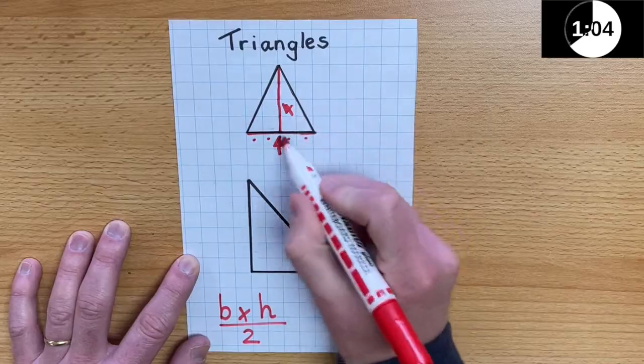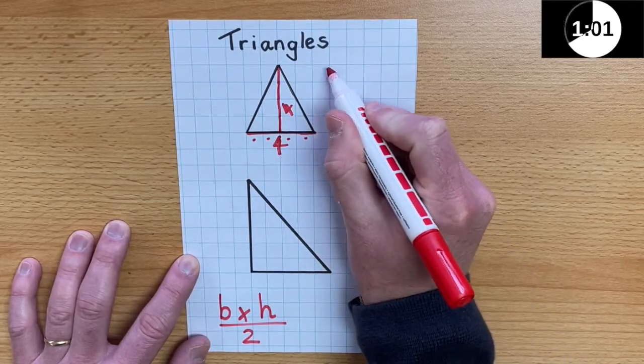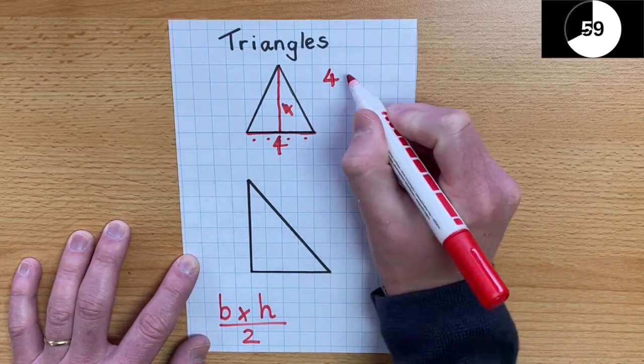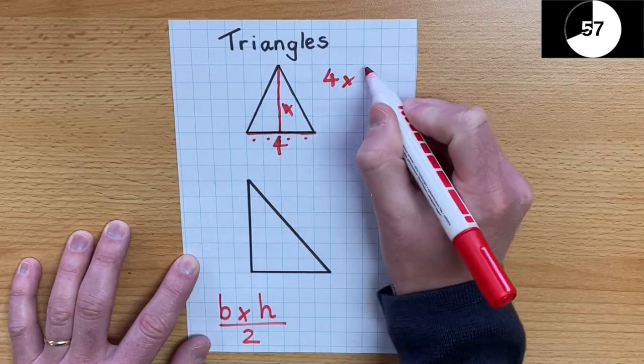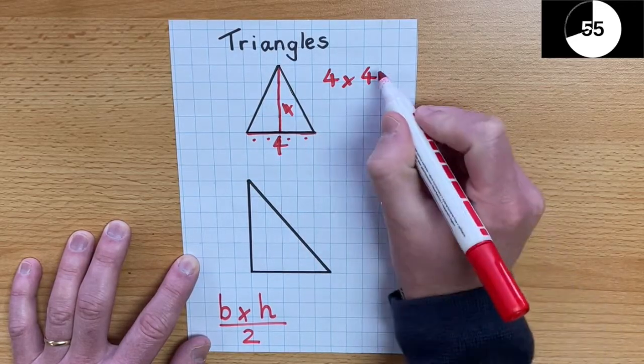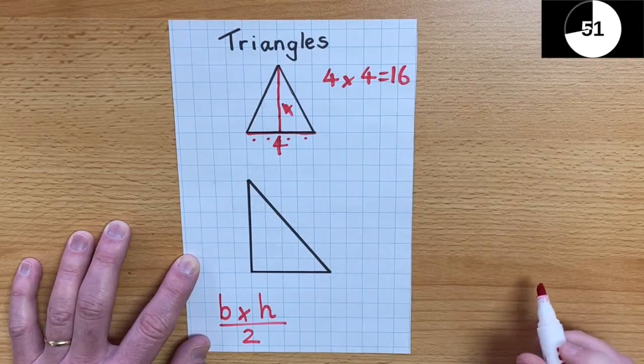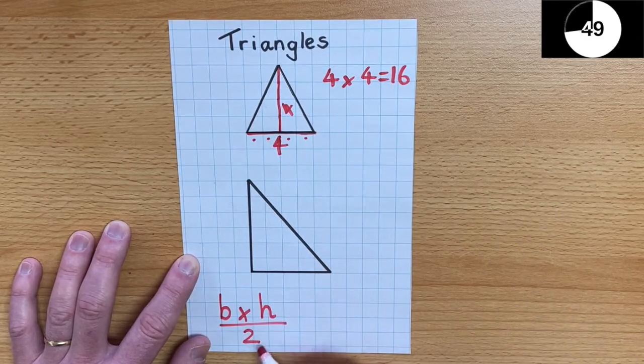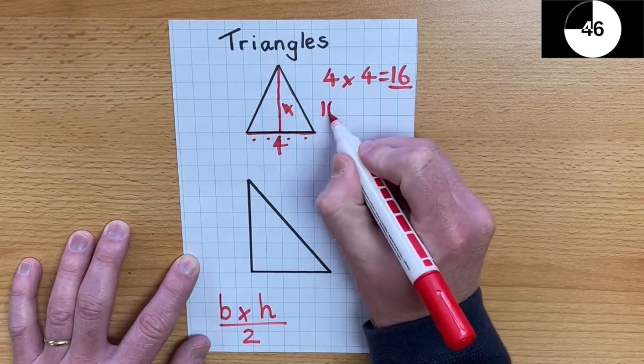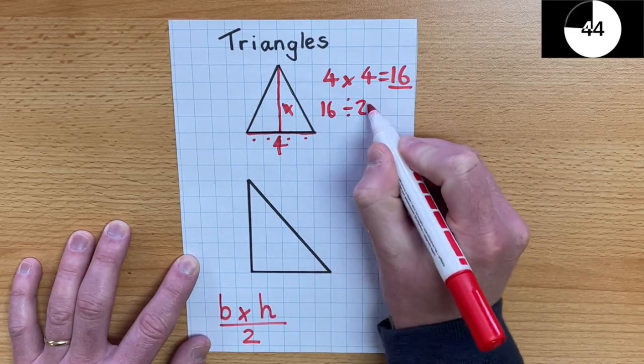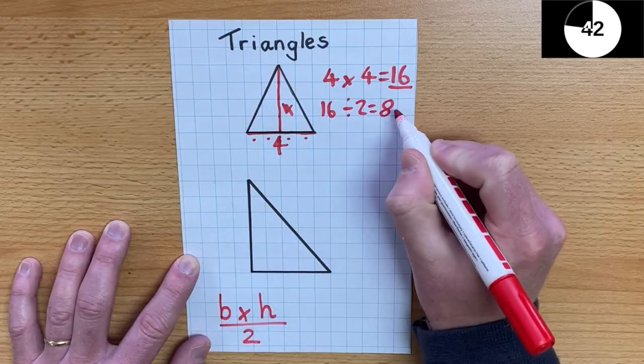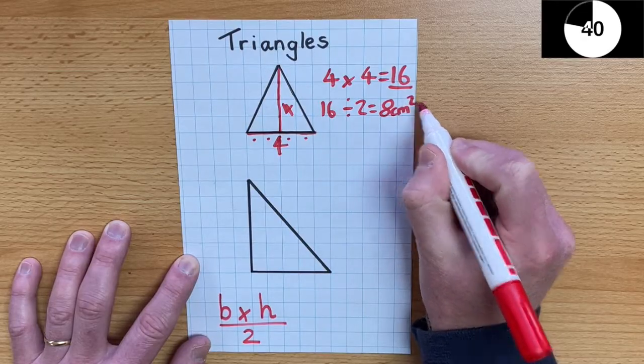So, to work out the area of this triangle, I need to do 4, which is the base, multiplied by 4, which is the height. That gives me an answer of 16. Then, I need to divide it by 2. So, 16 divided by 2 equals 8 centimeters squared.